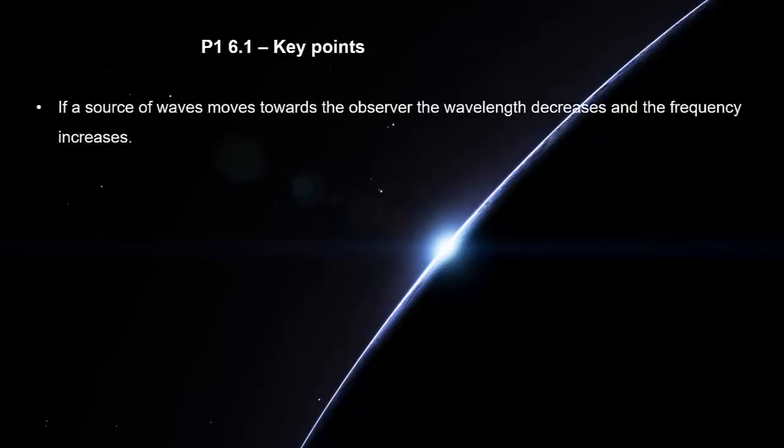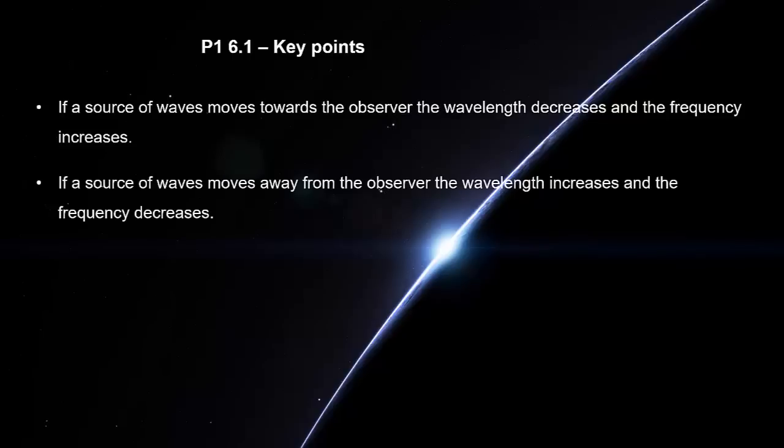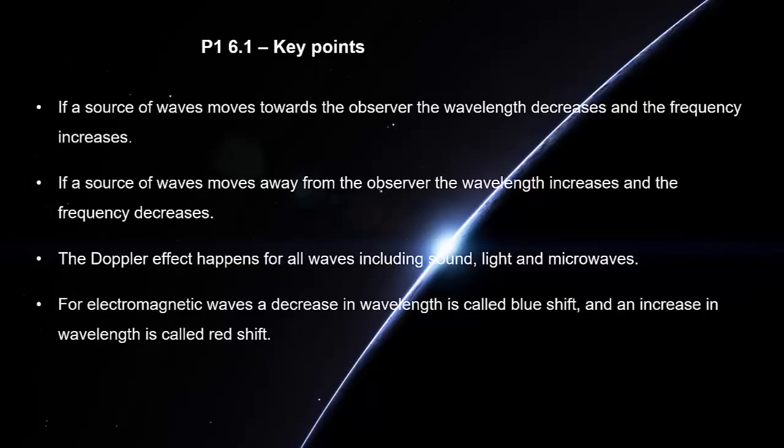If a source of waves moves towards the observer, the wavelength decreases and the frequency increases. If a source of waves moves away from the observer, the wavelength increases and the frequency decreases. The Doppler effect happens for all waves including sound, light and microwaves. For electromagnetic waves, a decrease in wavelength is called blueshift and an increase in wavelength is called redshift.